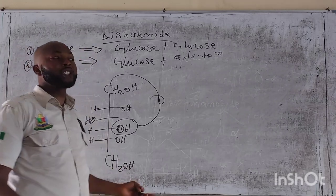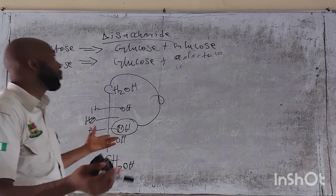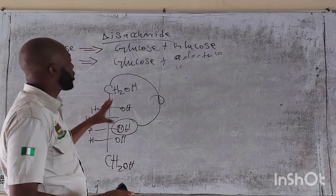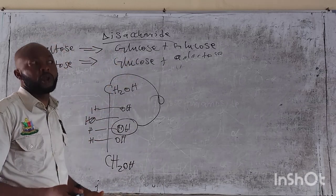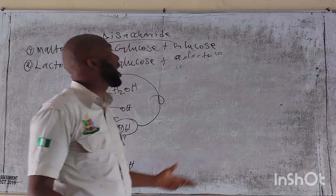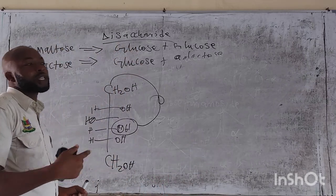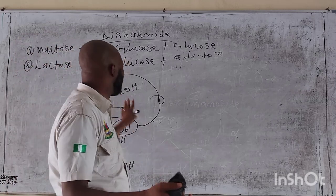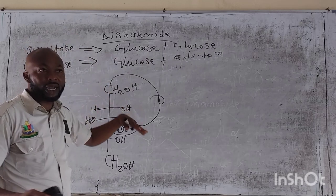We are done with monosaccharides and disaccharides. Let's look at oligosaccharides — an oligosaccharide is just a polymer that consists of between about 1 to 30 monomers of glucose. Now polysaccharides deal with more than sometimes 1,500 to 3,000 molecules of monomers — glucose, galactose — to give us the polymer.